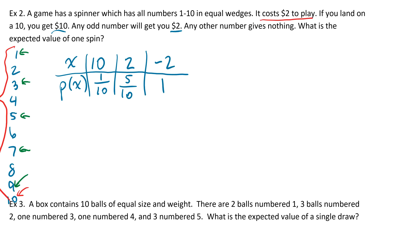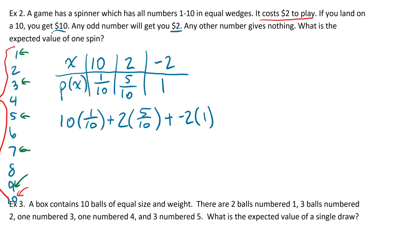We just multiply these through: 10 times 1/10, plus 2 times 5/10 — you're welcome to reduce that to 1/2, but since we're looking for a decimal at the end it doesn't matter — plus negative 2 times 1. Put that in your calculator and you should end up with 0. Which means if you play this game enough times, you're actually going to be breaking even — you're not going to win any money, not going to lose any money, you'll walk out with what you started with.